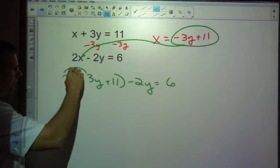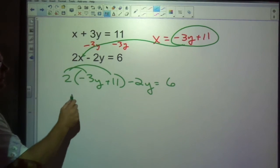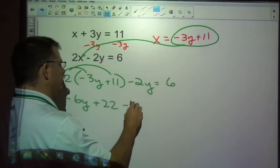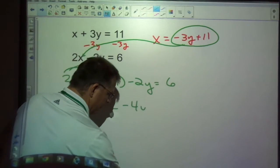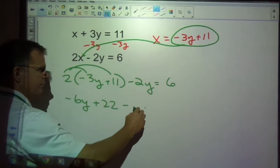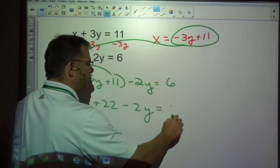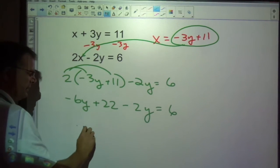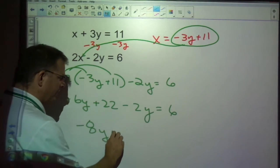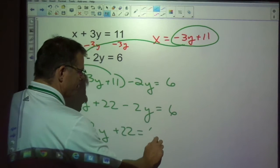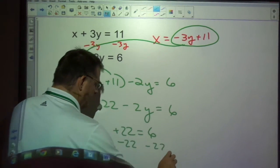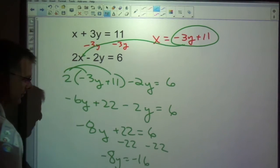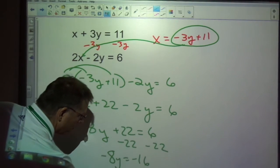And now I can solve for y because I have all y's here. Negative 6y plus 22 minus 4. There's just 2y. I don't keep distributing there. Negative 6y and negative 2y make a combined negative 8y on this side. And if I subtract 22, that gives me negative 16. So dividing y equals 2.